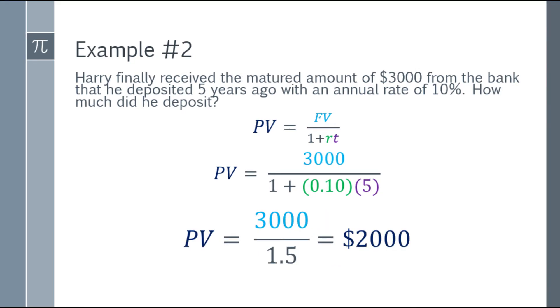Okay? So he received a matured amount of $3,000 which he got after 5 years with an annual rate of 10%. The amount he deposited 5 years ago was $2,000. So to reverse it, 5 years ago he deposited $2,000. So he waited 5 years because the annual rate is 10%. Okay? So what he got after 5 years is $3,000 because the future value is $3,000. The present value is $2,000.